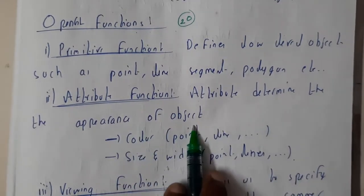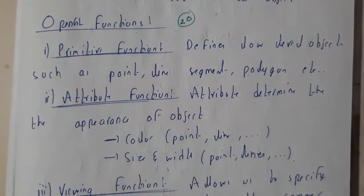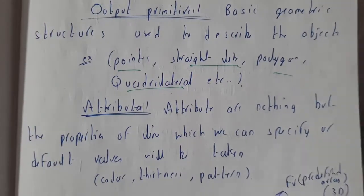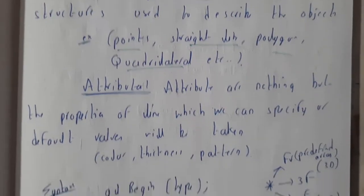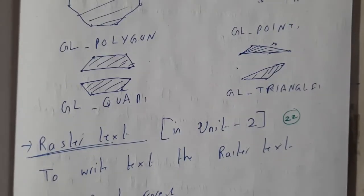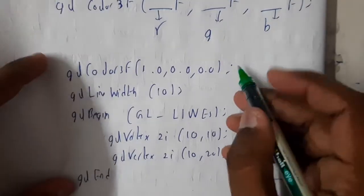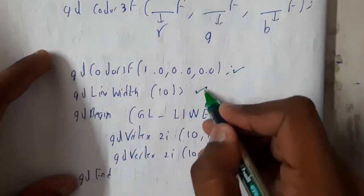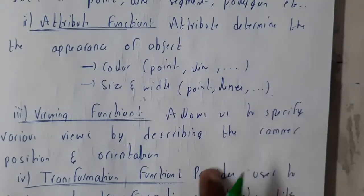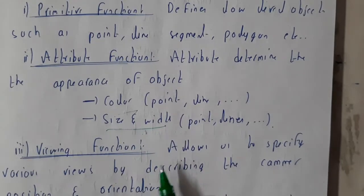Attributes determine the appearance of an object. I hope everyone got a small idea on this. If you want small examples of these attributes, here are some. Coloring is an attribute. Line width is an attribute. Attributes define something about an object - like color, size, width.